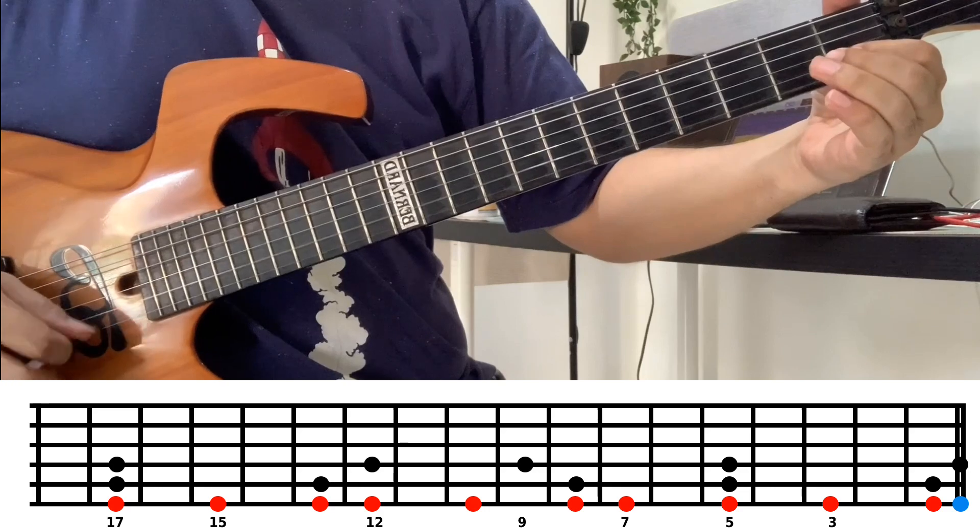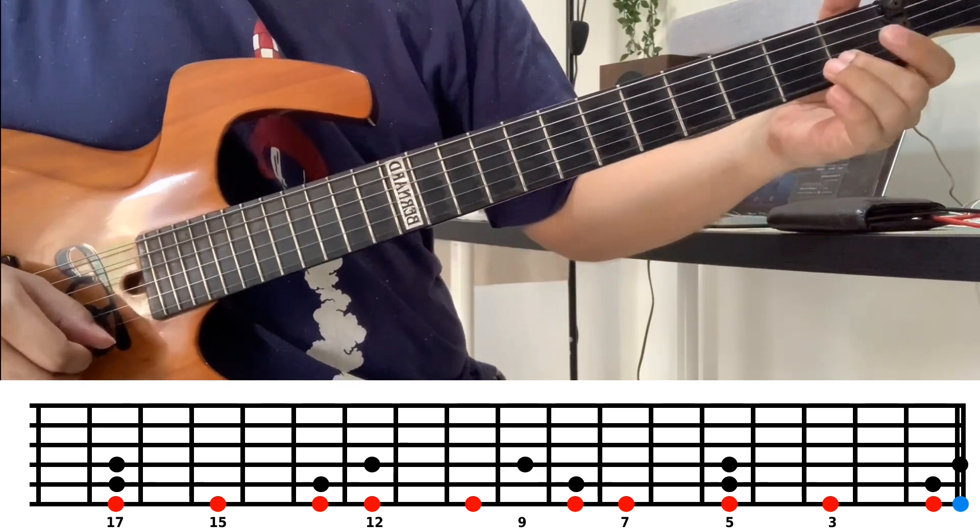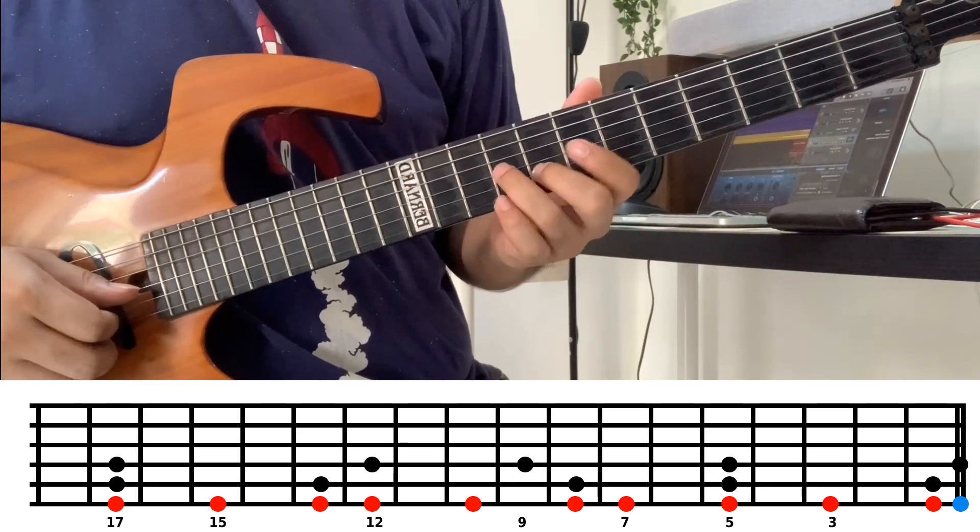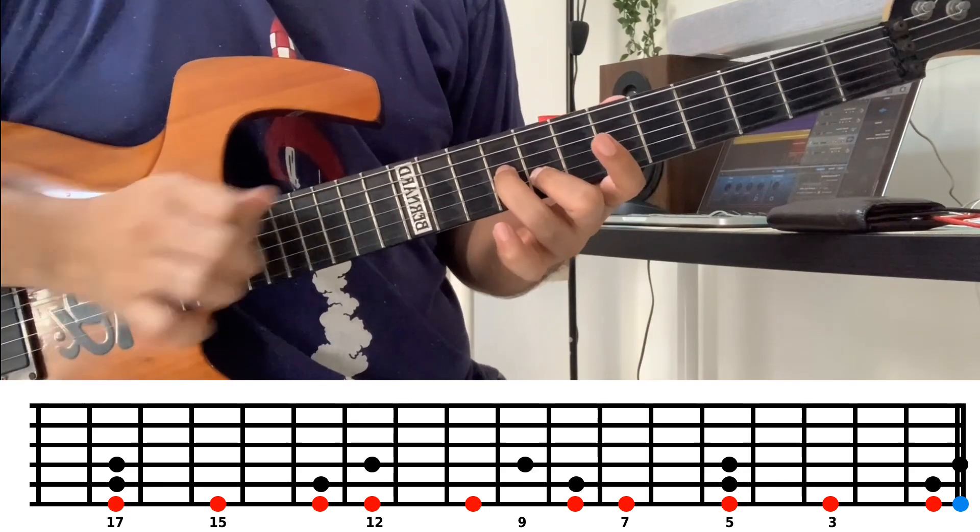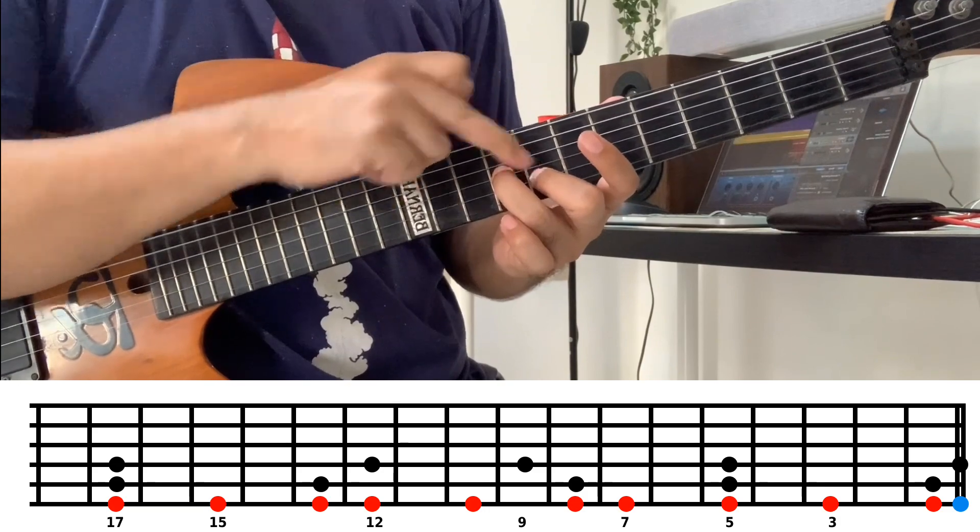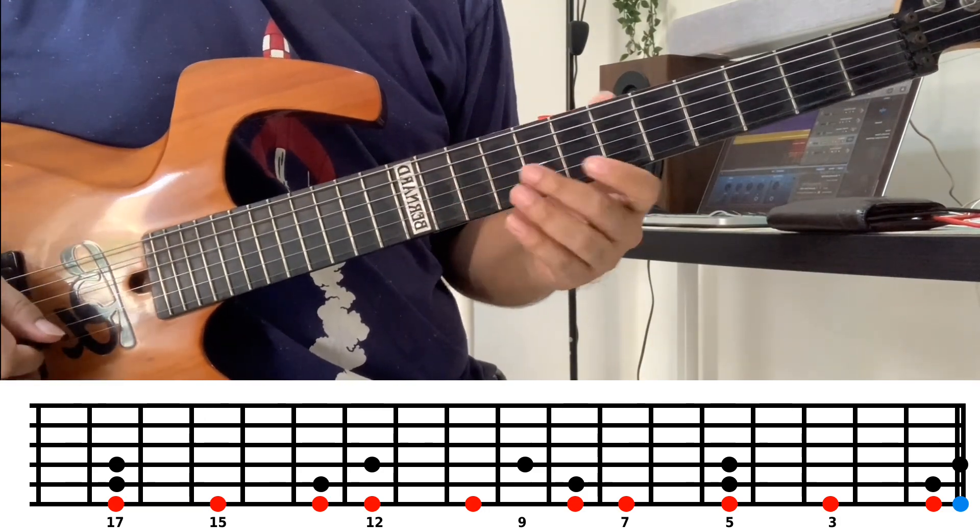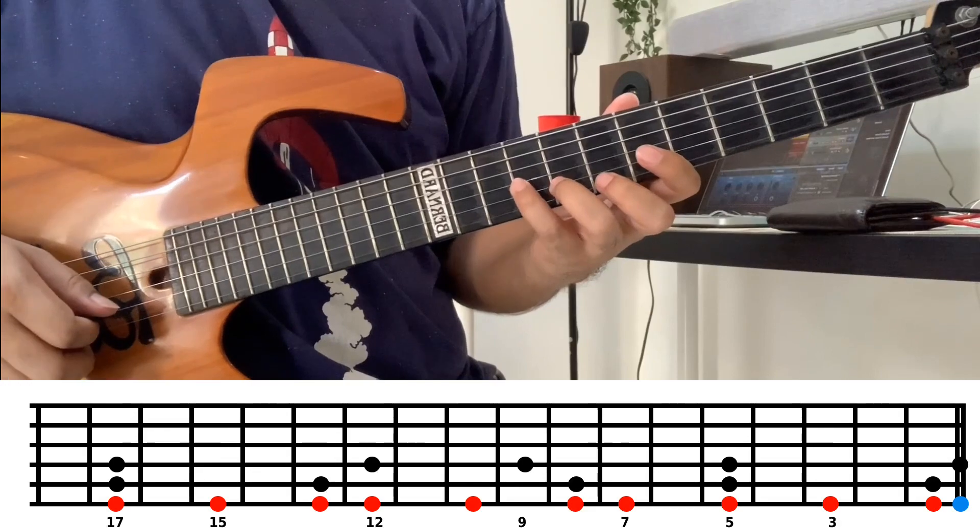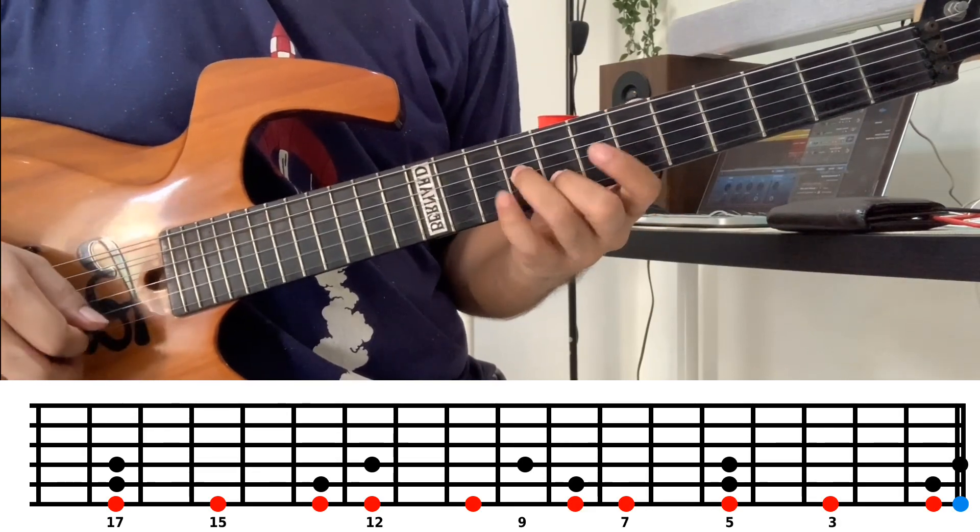So we're combining the shapes. The next shape is like this. This is the third string at fret nine and the second string at fret eight. We can add it, for example. This can also be various ways - can be like this, like this, like this.